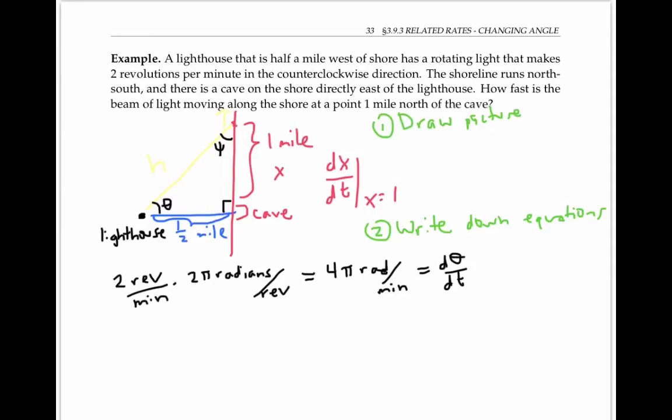Therefore, I'd really like to write down the equation that has to do with theta and x. And from trig, I know that tangent of theta is opposite over adjacent. So I can write down tan(θ) equals x divided by one half, or in other words, tan(θ) is 2x. This is the equation that I need that relates x and theta.